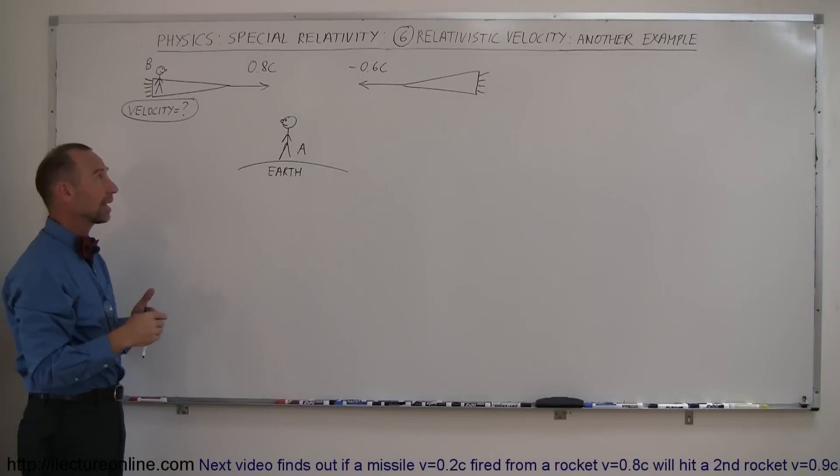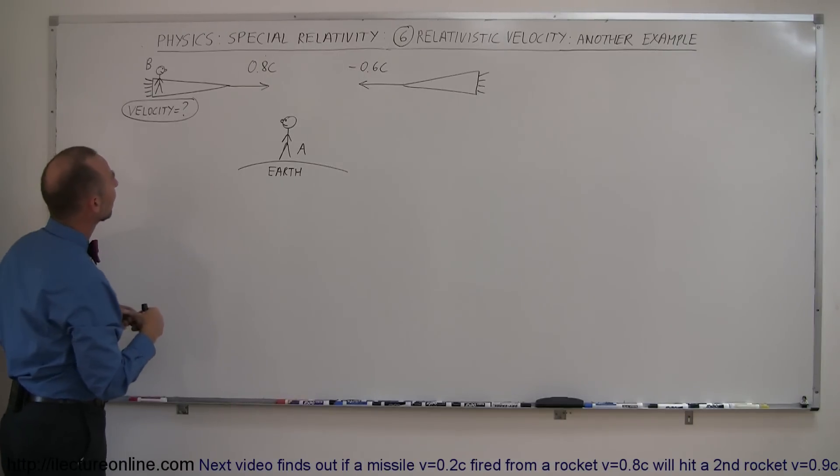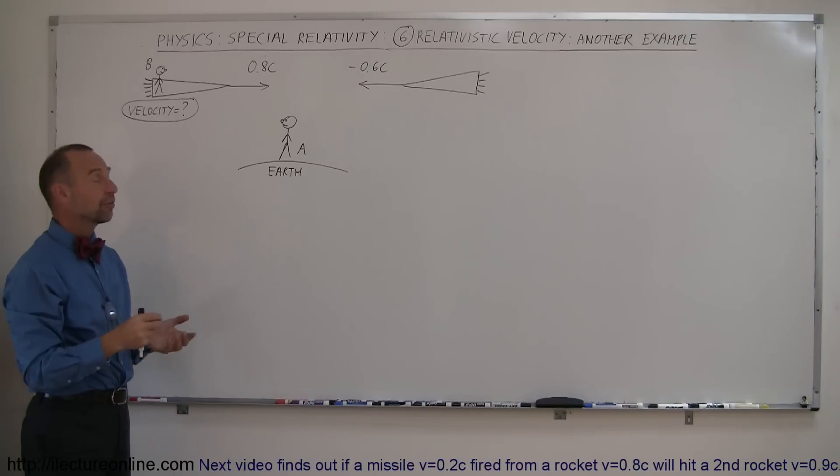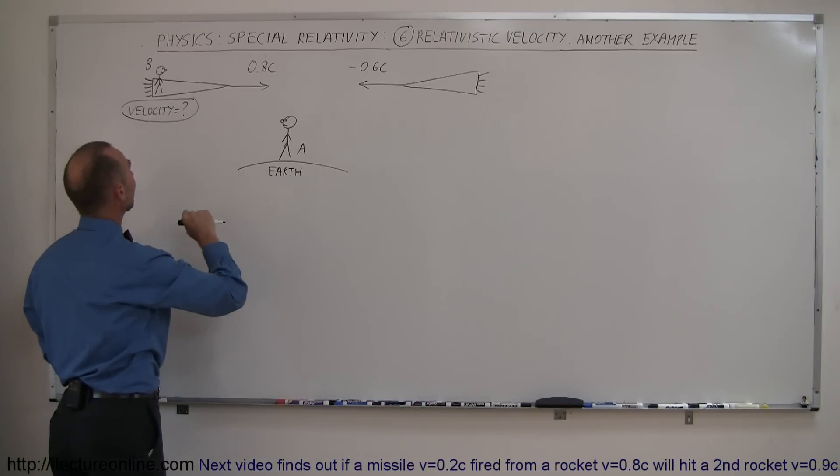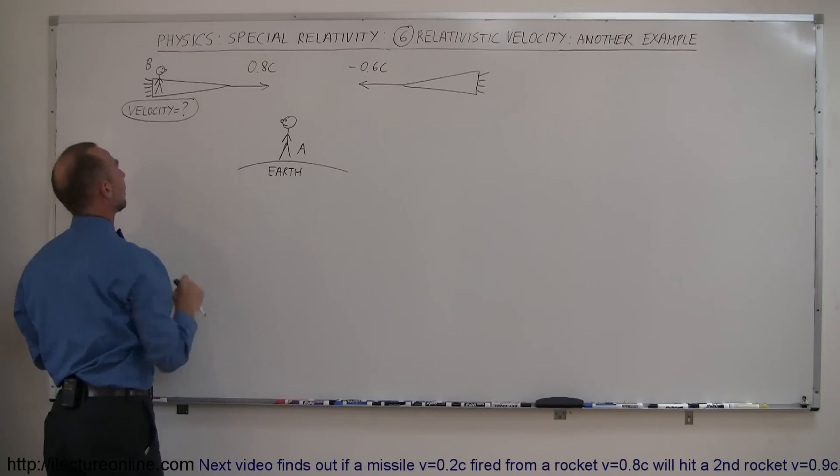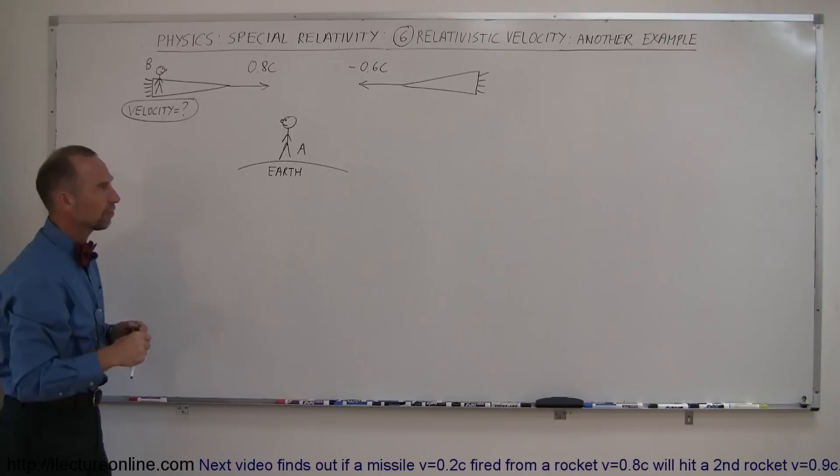So again, you have to decide three velocities. You have to figure out what is the moving reference frame, what is the stationary reference frame. You also have to figure out what is the event, and then what the velocity is in relation to the stationary reference frame and the velocity in relationship to the moving reference frame.